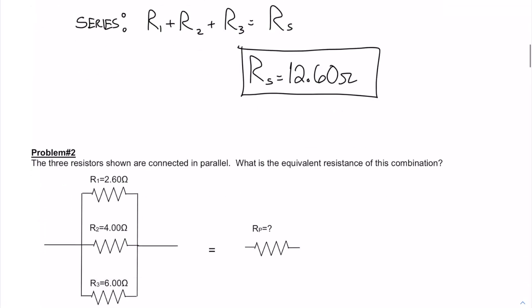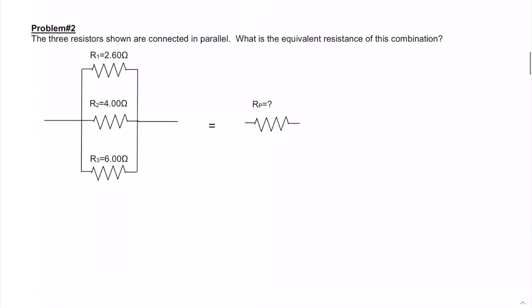Now let's look at problem two. Problem number two has the same three resistors as problem number one, but this time they're connected in parallel instead of series. So we're going to find their equivalent resistance when they're connected this way.